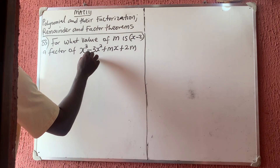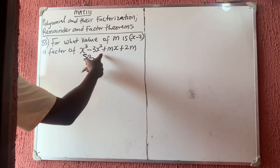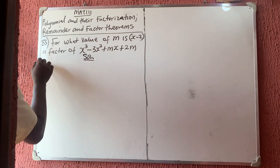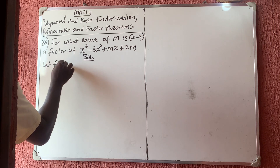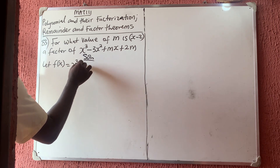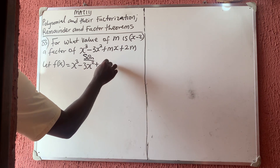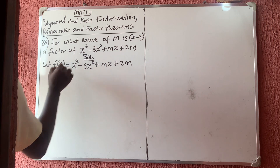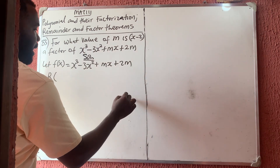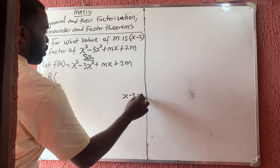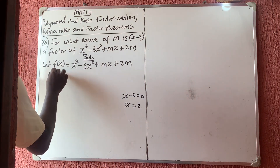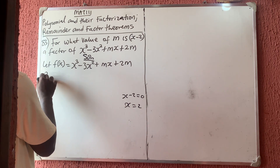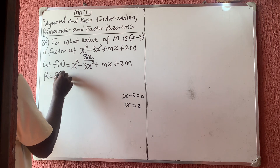So if you use the remainder theorem, let f(x) be equal to that polynomial: x cubed minus 3x squared plus mx plus 2m. The theorem says that since the factor is x minus 2, we set x minus 2 equal to zero, so x equals 2. The remainder is equal to f(2).